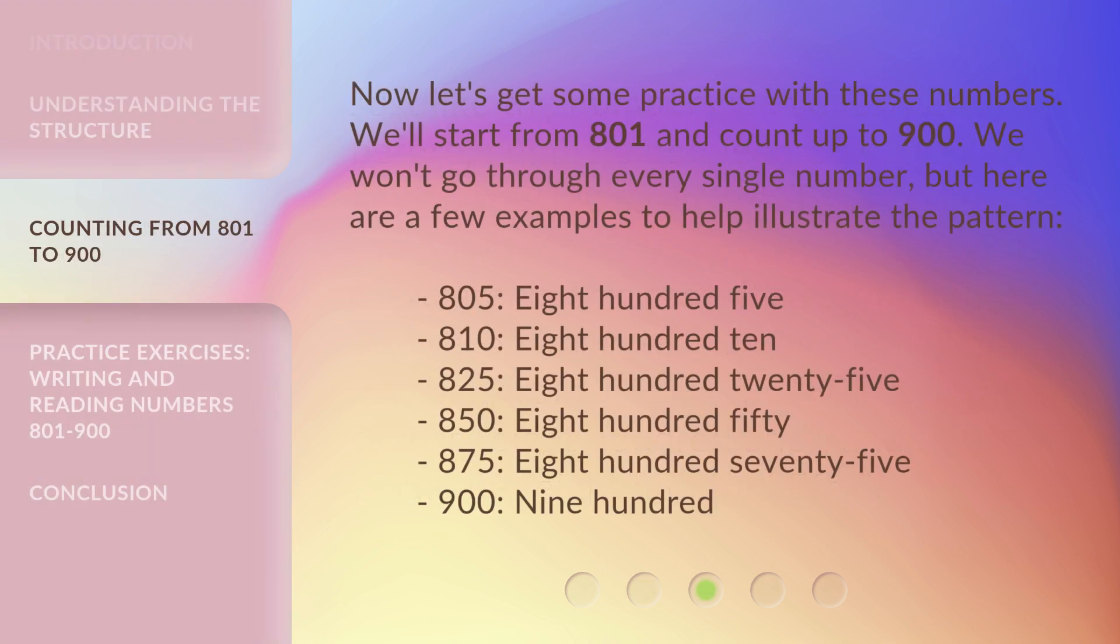Now let's get some practice with these numbers. We'll start from 801 and count up to 900. We won't go through every single number, but here are a few examples to help illustrate the pattern: 805, eight hundred five. 810, eight hundred ten. 825, eight hundred twenty-five. 850, eight hundred fifty. 875, eight hundred seventy-five. 900, nine hundred.